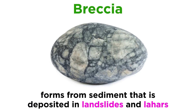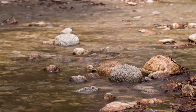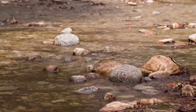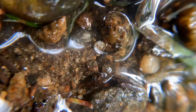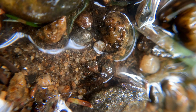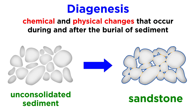Conversely, sediments that have been deposited adjacent to their source will be composed of various silicate minerals, especially feldspar, and will be relatively angular and poorly sorted. Breccia, which is a type of rock that commonly forms from sediment deposited in landslides and lahars, displays these characteristics. We now know about sediment — where it comes from, how it's transported, and how it changes during transport. All that is left to explore is how sediment changes after it is deposited.